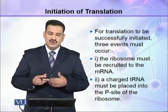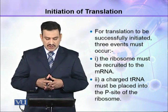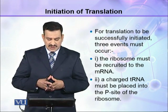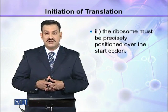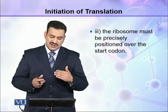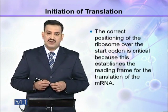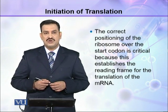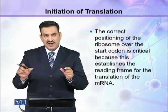For translation to be started successfully, three events must occur: the ribosome must be recruited to the mRNA, a charged tRNA must be placed into the P site of the ribosome, and the ribosome must be precisely positioned over the start codon. The correct positioning of the ribosome over the start codon is critical because this establishes the reading frame for the translation of the mRNA.